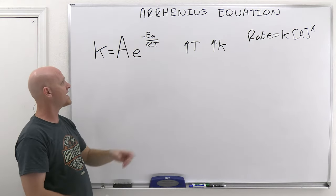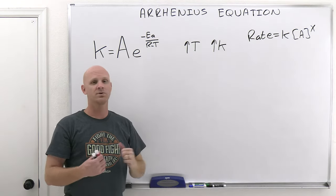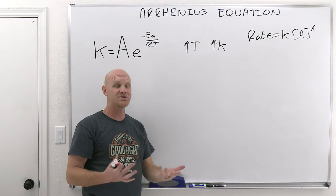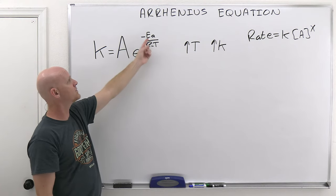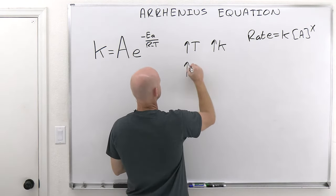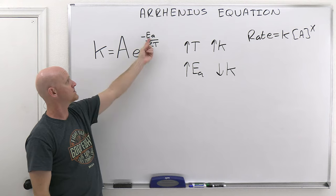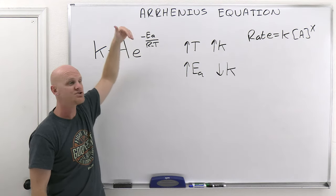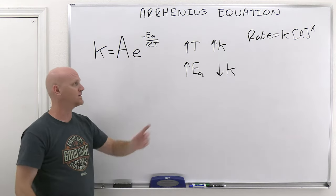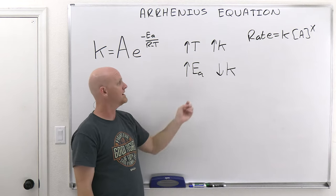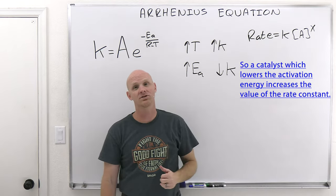If we look at activation energy, it's the exact opposite. A larger activation energy means you have a bigger energetic hill to get over, and fewer molecules have enough energy to get over that hill, giving a lower rate. A larger activation energy leads to a smaller rate constant — a more negative exponential makes the k value go down. And that smaller rate constant leads to a slower rate.